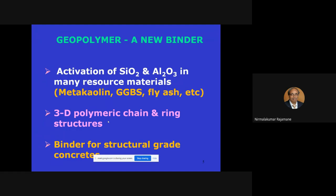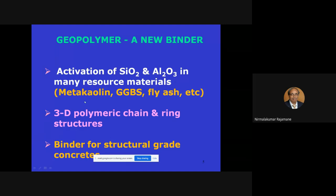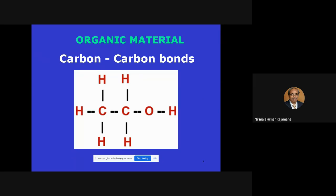My aim is to give an overall view and a basic picture, then we can work on details later. Geopolymer is actually a 3D polymeric chain and ring structure — this is the basic binder material, which is not the case in Portland cement. These two components — silicon and aluminum — must be present in the resource material; that is a very basic requirement.